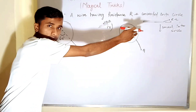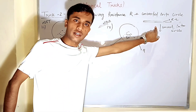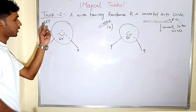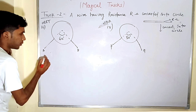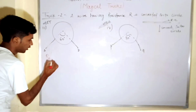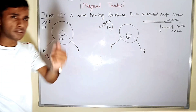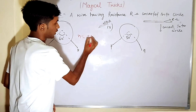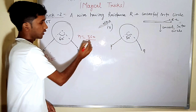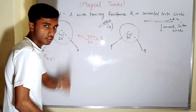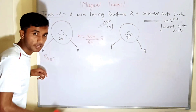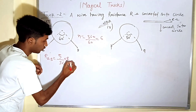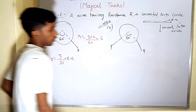Third question: what is R₀ resistance? The question is one where we have converted it to a circle, so R-A-B equals J-E. Now what is this? 360 divided by theta, where theta equals 7, giving 6. So the answer is 5/36 into R.